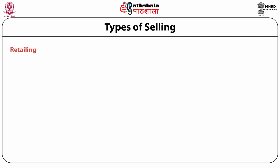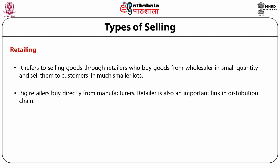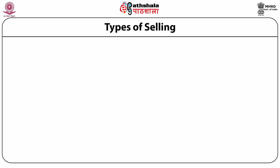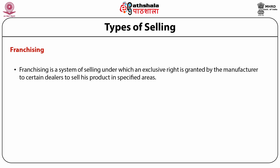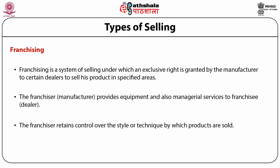Retailing refers to selling goods through retailers who buy goods from wholesalers in small quantity and sell them to customers in much smaller lots. Big retailers buy directly from manufacturers. A retailer is an important link in the distribution chain, dealing directly with consumers and collecting information about their needs, which is helpful to producers. Franchising is a system of selling under which an exclusive right is granted by the manufacturer to certain dealers to sell his product in specified areas. The franchiser provides equipment and managerial services to the franchisee, and retains control over the style or technique by which products are sold.